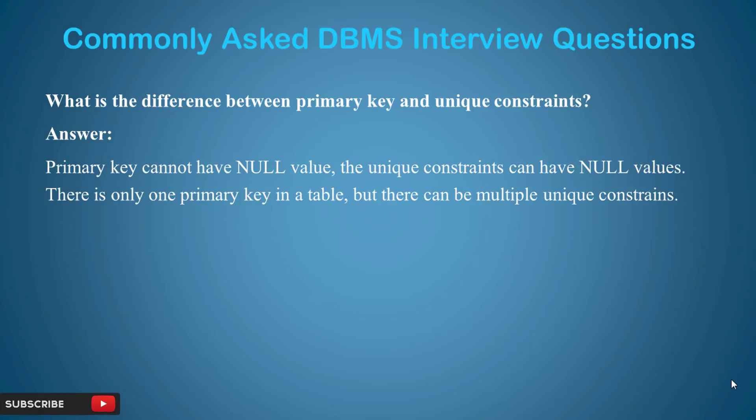The third question is: what is the difference between a primary key and a unique constraint? A primary key cannot have a null value — null values are not allowed in a primary key — but a unique constraint can allow null values. Also, there is only one primary key in a table, but there can be multiple unique constraints.